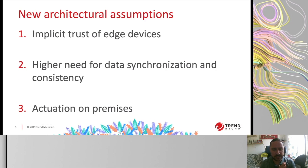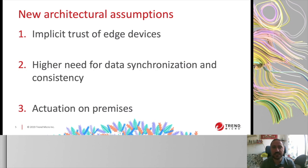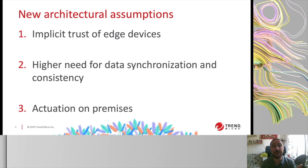One thing people tend to neglect is that edge computing introduces three new architectural assumptions. First, there is implicit trust on the device — edge devices must be trusted because they are in charge of acquiring, processing, and making decisions autonomously. Second, there's a higher need for data synchronization and consistency, since processing is done by individual nodes that need to stay up-to-date with one another. Third, actuation is done on-premises by the device itself, without necessarily any supervision.